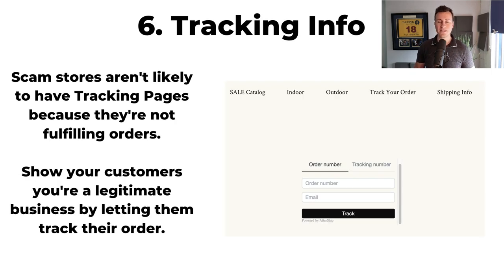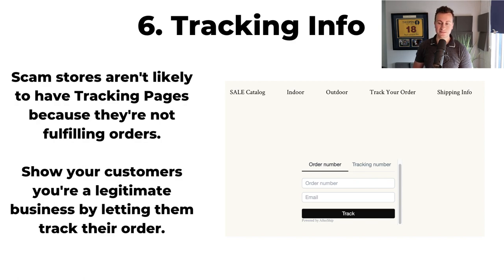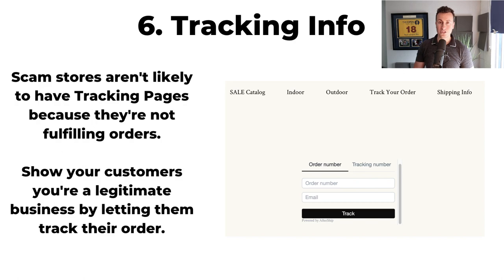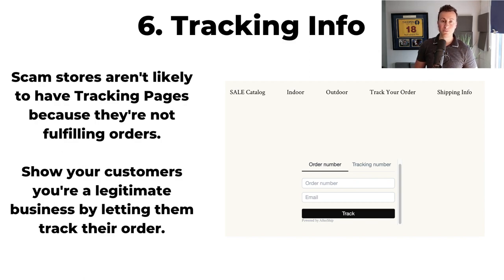Number six is tracking information. Scam stores aren't likely to have tracking pages because they're not fulfilling their orders. Show your customers you're a legitimate business by letting them track their order. It's super easy, there are free options, and there's absolutely no reason why you can't have it on your store. A great example is that very same Twinkling Tree website — a proven seven-figure dropshipper — and this is what their 'Track Your Order' page looks like.